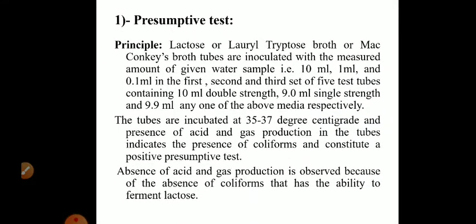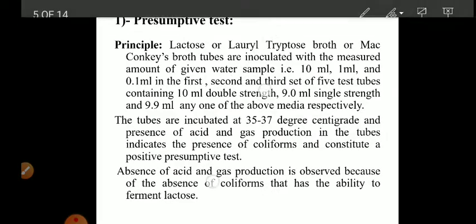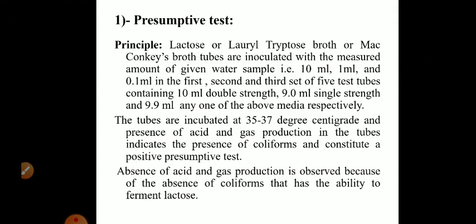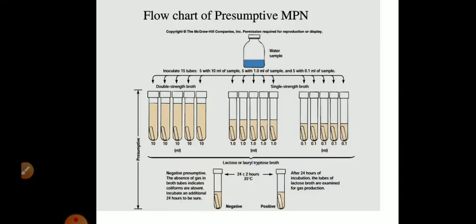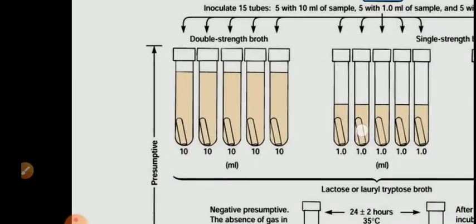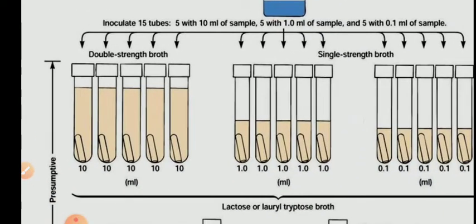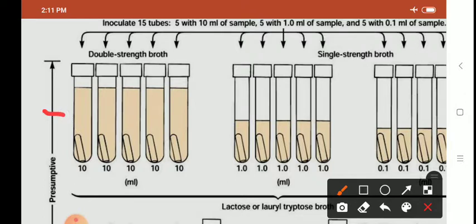After 24 hours, we check whether acid and gas are produced in the tubes. Acid production is shown by a change in the color of the indicator, and gas production is seen by appearance of a bubble — by downward displacement of liquid, gas gets collected in the Durham tube. Now look at the flow chart. In this bottle shown in blue color, we have the water sample. There are 15 test tubes shown: in the first set of 5 test tubes we have double-strength broth, with a Durham tube placed in each.